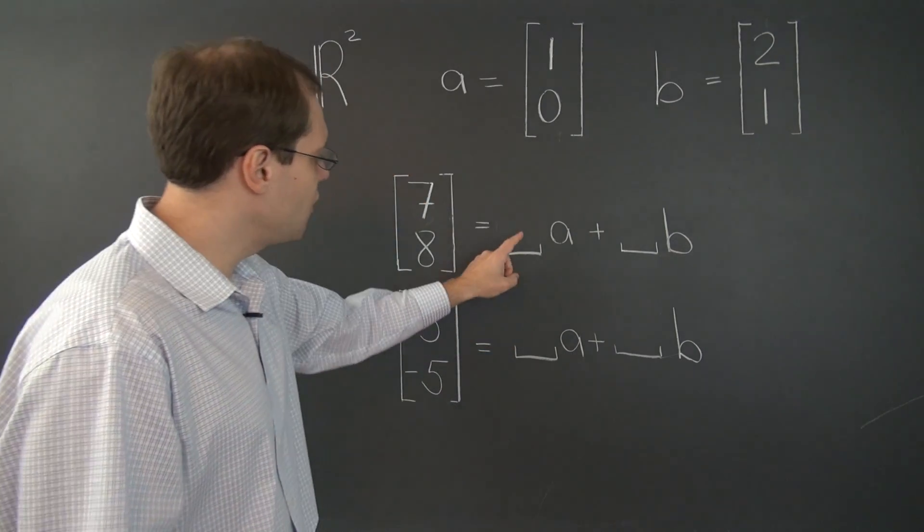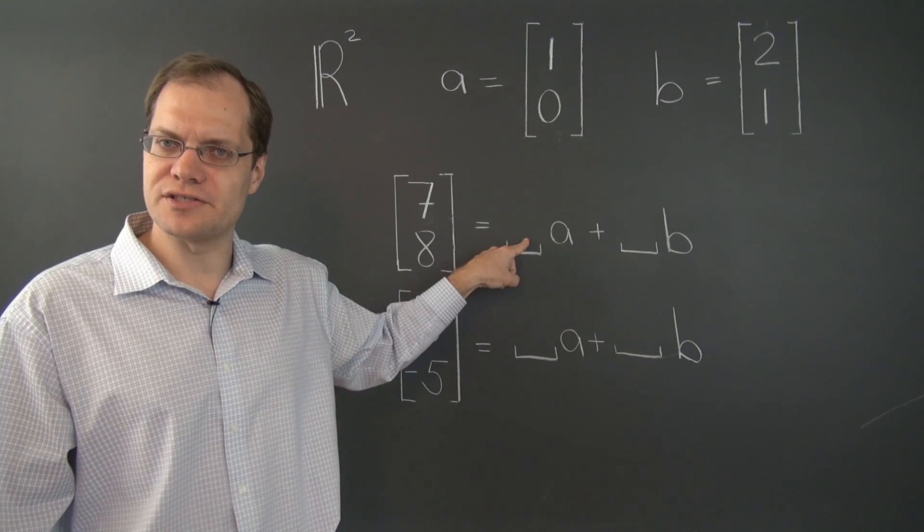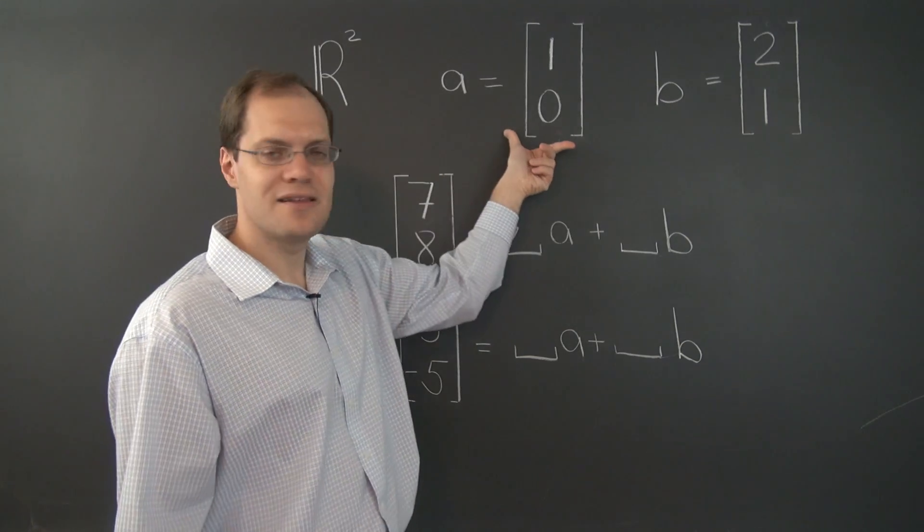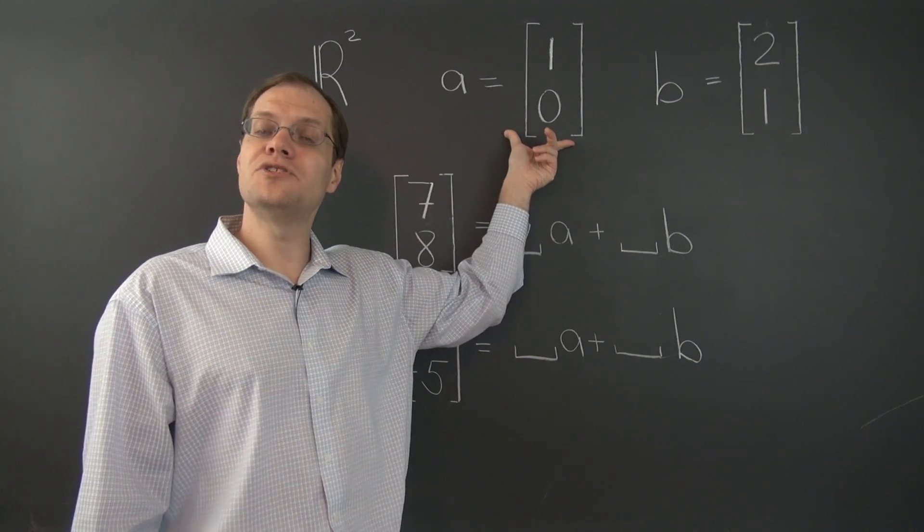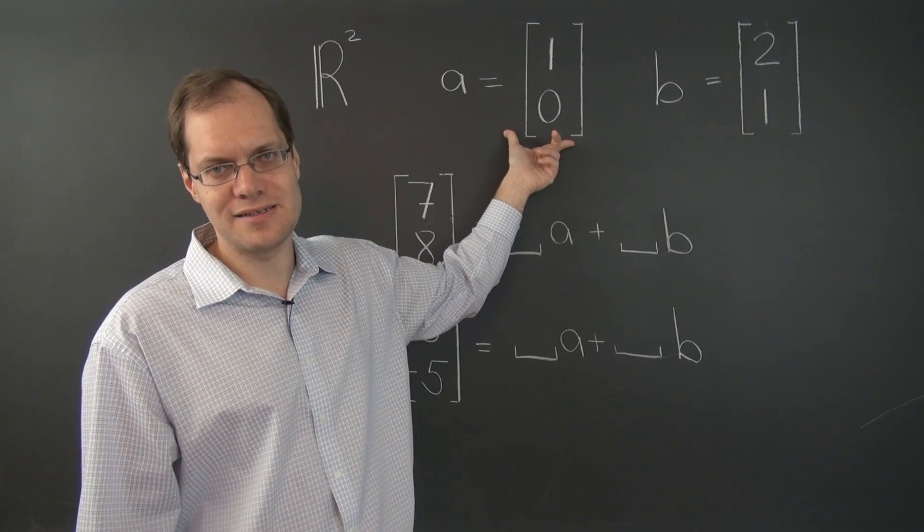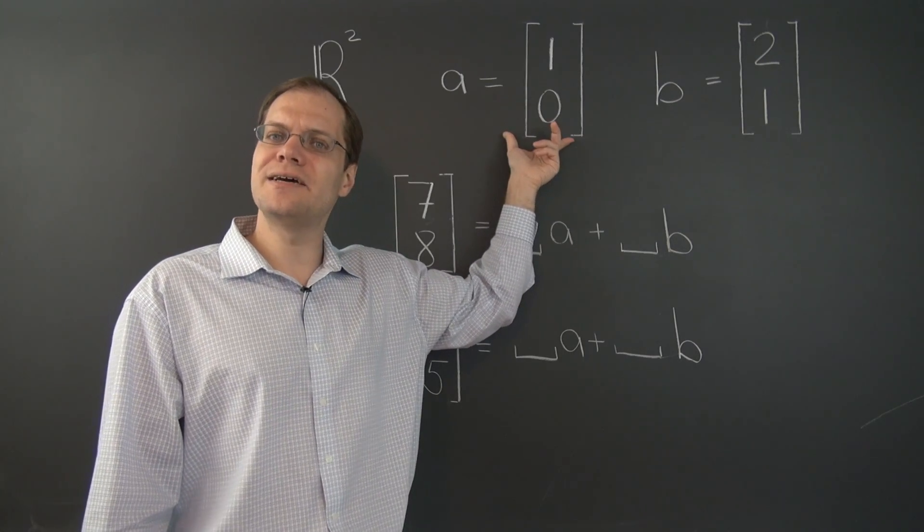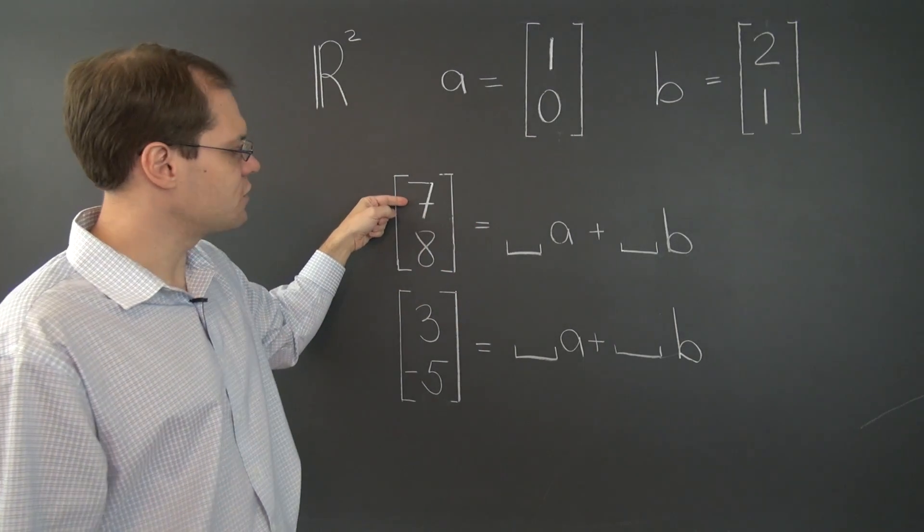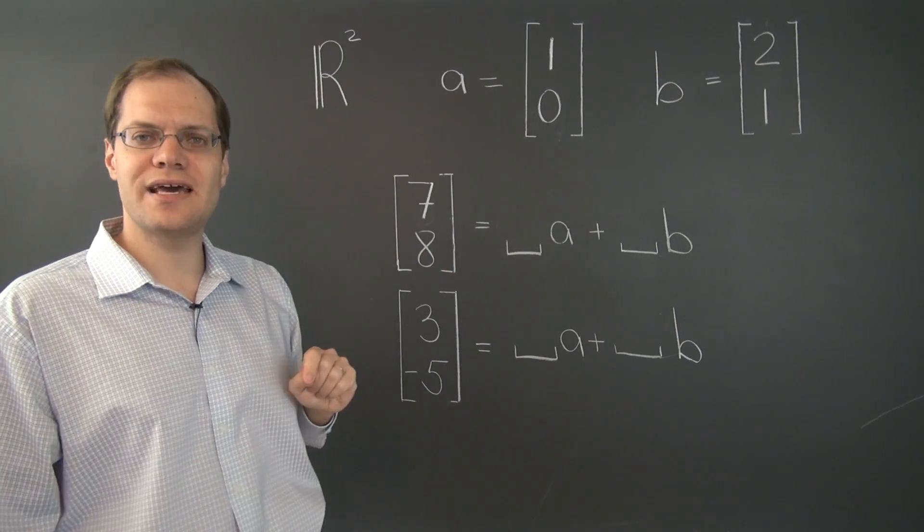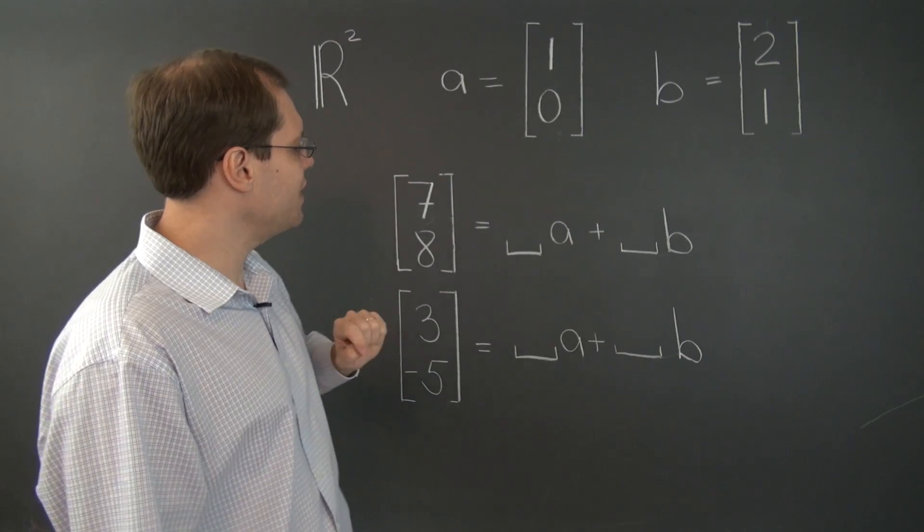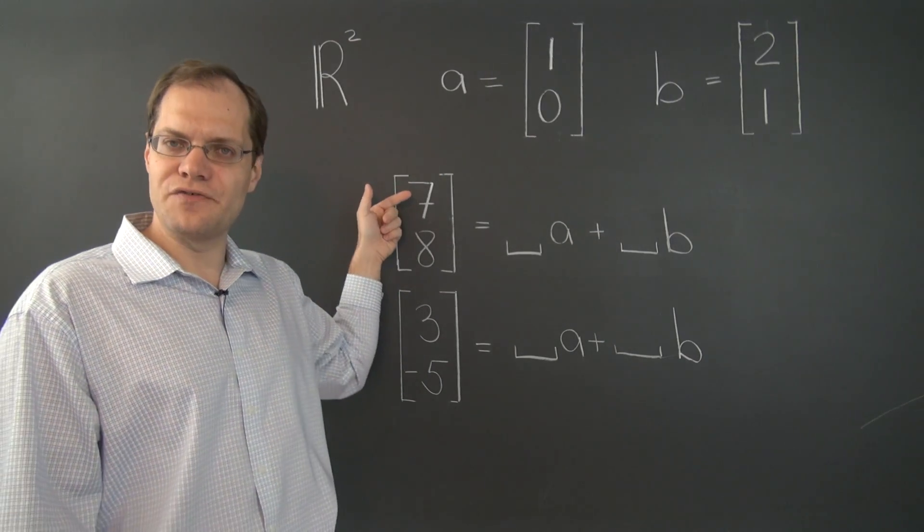You might be tempted to go after this coefficient first because you see this vector a, which by now is one of your few favorite things, and you decide to take immediate advantage of it to match the first entry. So you would say, we need 7 of A. That will indeed match the first entry.